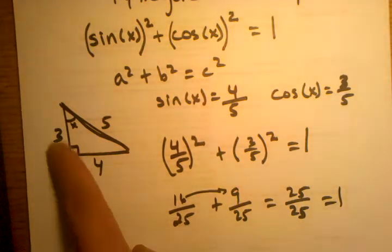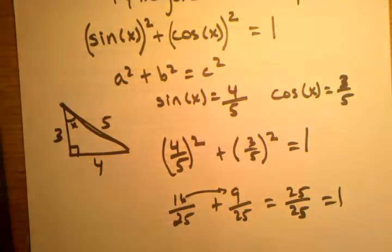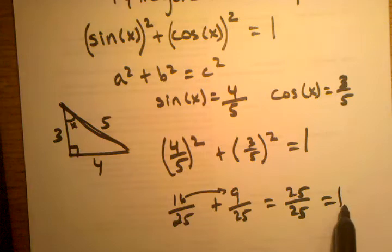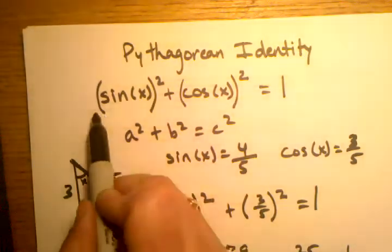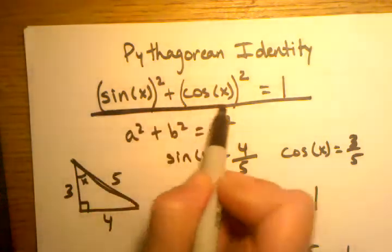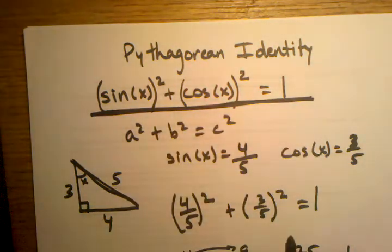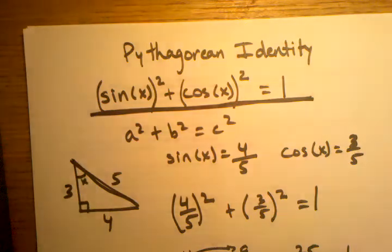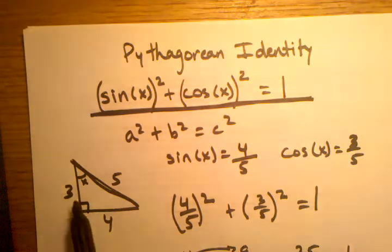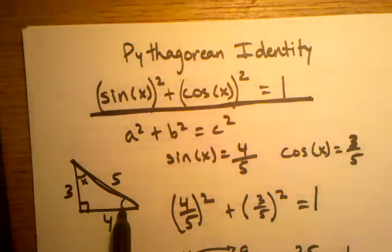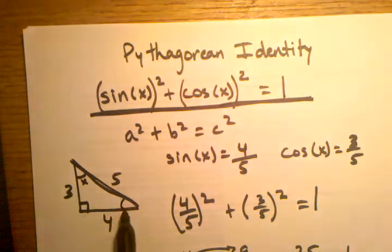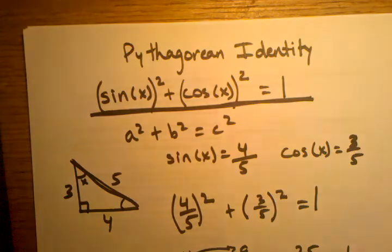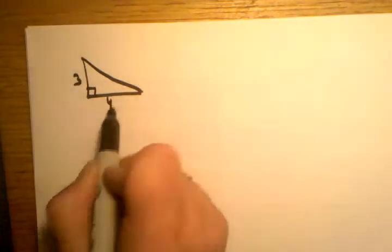So we just saw one example with one right triangle of how the numbers work. If you try this with different right triangles — make sure it's a right triangle — you'll always end up with one. It just always works. Right now in geometry you don't really need to use this frequently, but starting next year you're going to use this identity very frequently, so this is just an introduction to how it works.